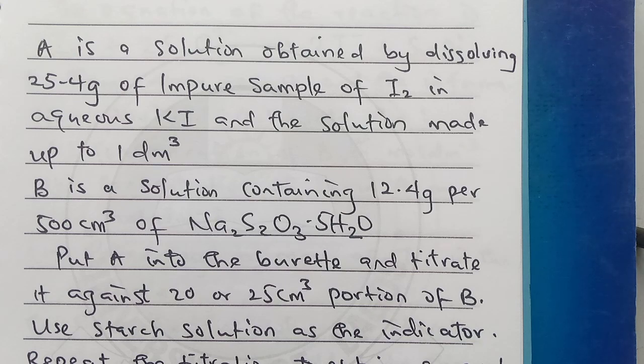A is a solution obtained by dissolving 25.4 grams of impure sample of iodine in aqueous potassium iodide, and the solution made up to 1 dm³. B is a solution containing 12.4 grams per 500 cm³ of sodium thiosulfate pentahydrate. Put A into the burette and titrate it against 20 or 25 cm³ portion of B.